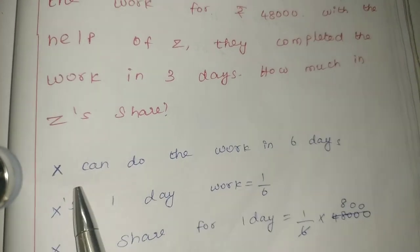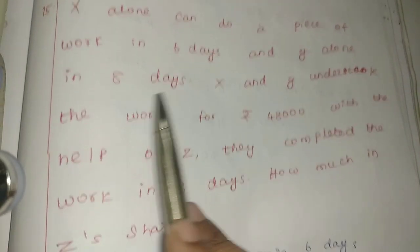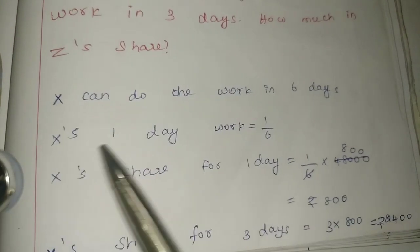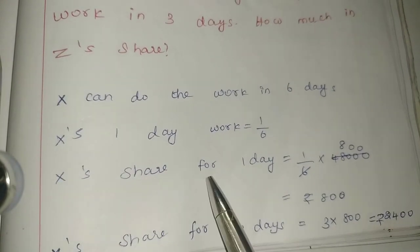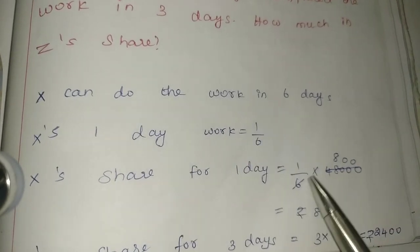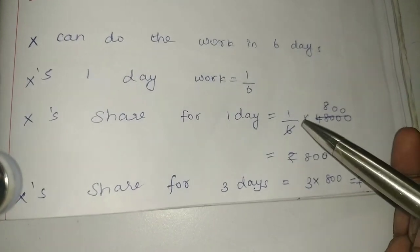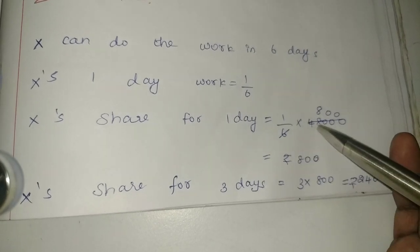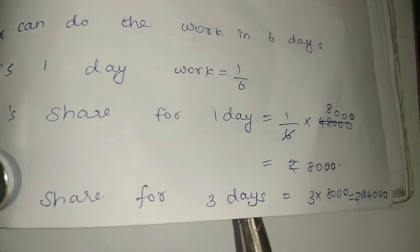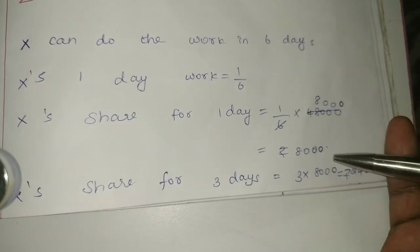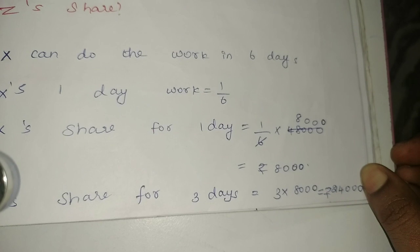X can do the work in 6 days. So X's 1 day work share is 1/6 into Rs.48,000, which equals Rs.8,000. So X's share for 3 days is 3 into 8,000, which is Rs.24,000.